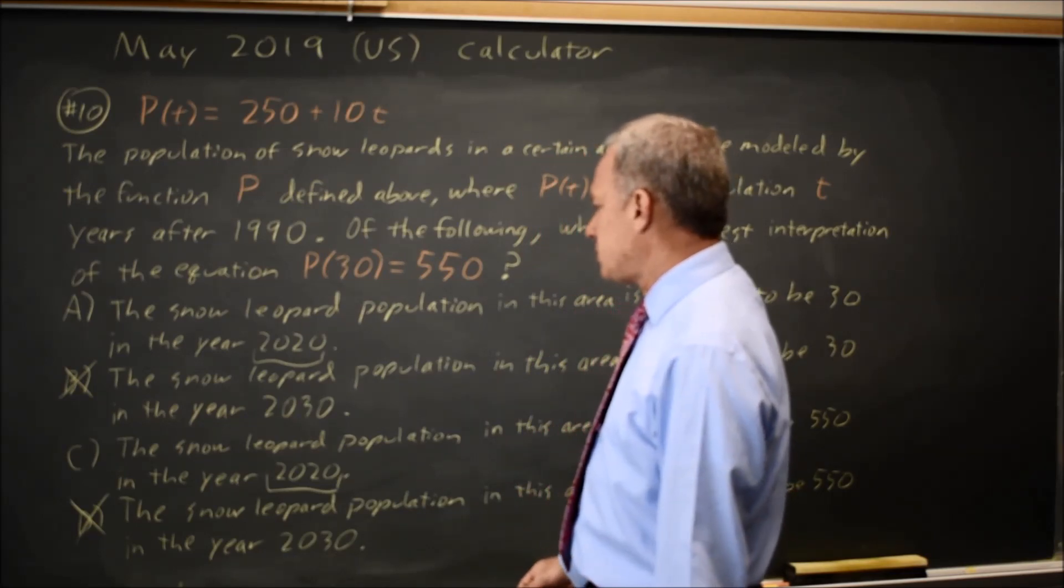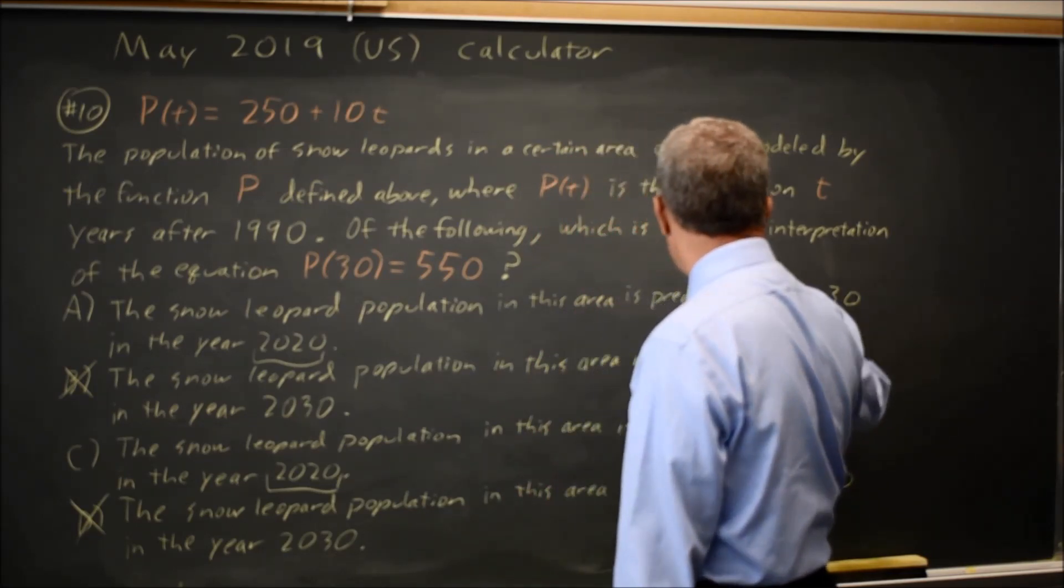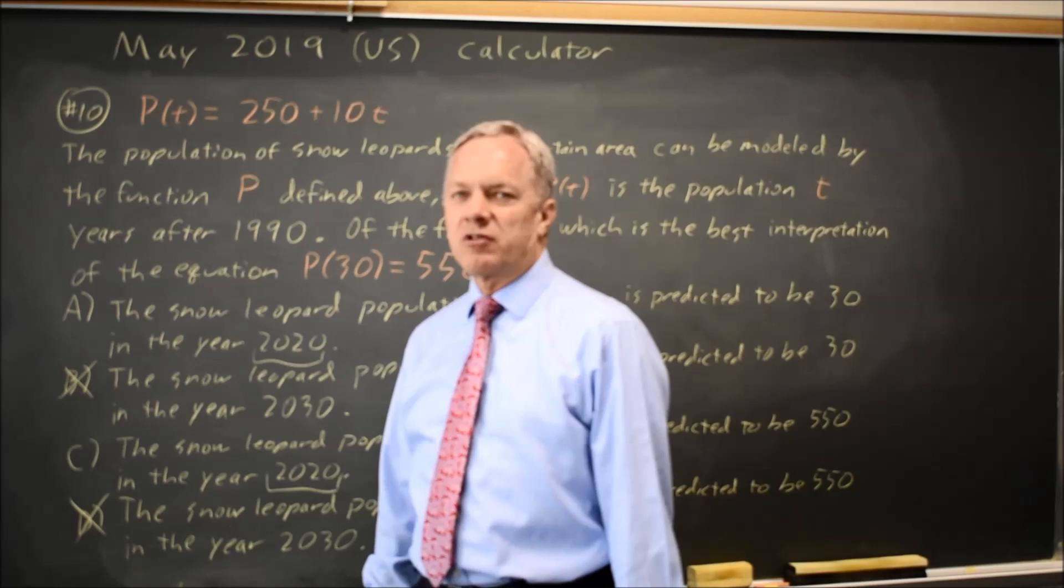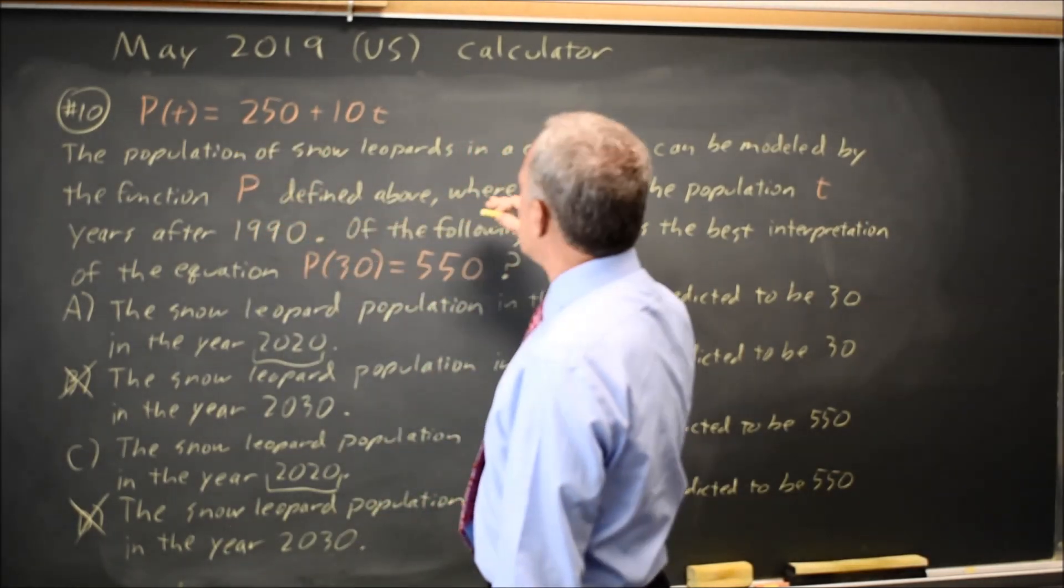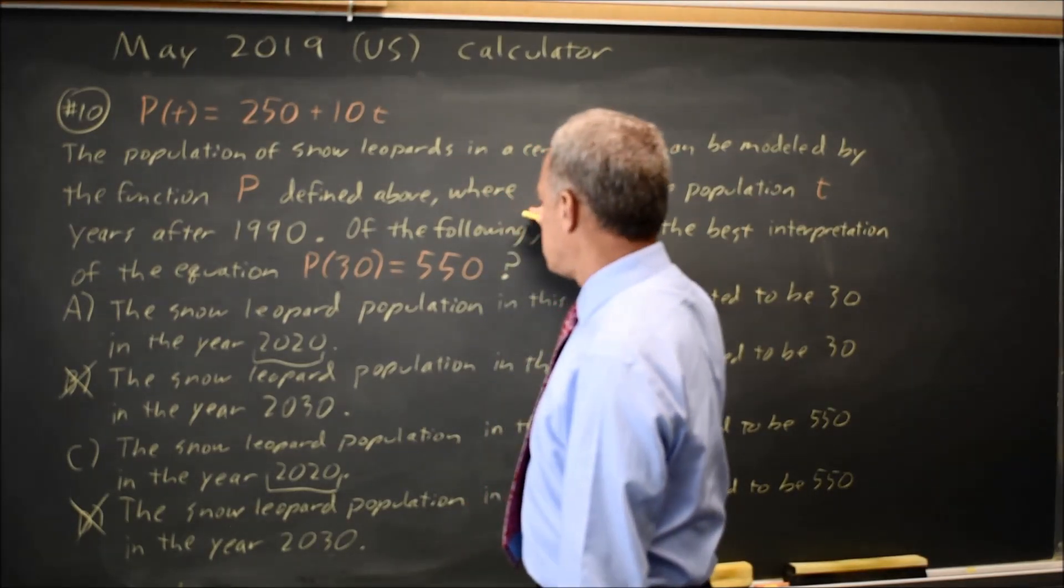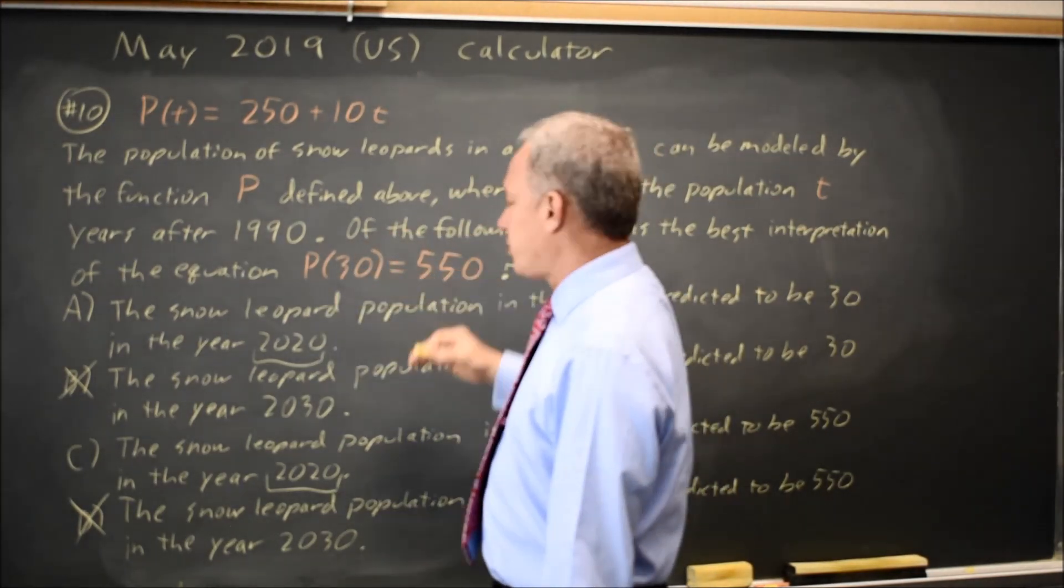Now, choosing between A and C, the question is, is the population predicted to be 30 or 550? Because P(T) is the population.